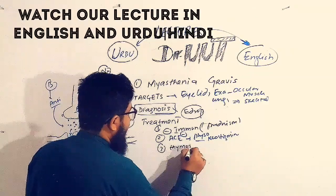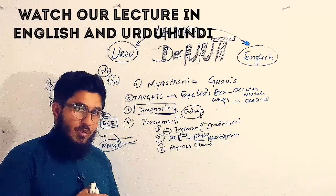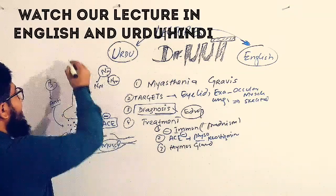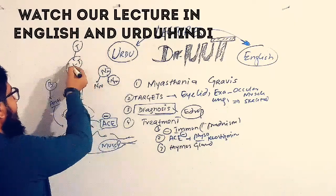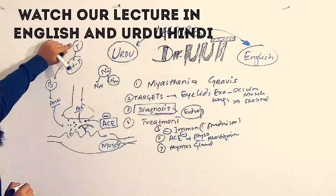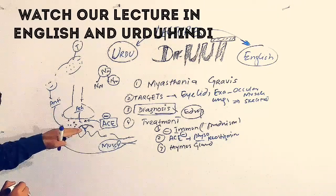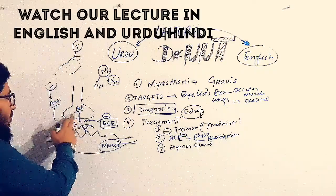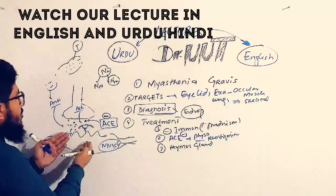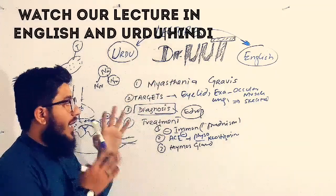The third treatment is removal of the thymus gland — thymectomy. Its full explanation is not widely discussed in books, but the thymus gland is responsible for releasing helper T cells, whose function is to activate B cells, which then release antibodies. If the thymus gland is removed, helper T cells are not available, B cells are not stimulated, antibodies are not produced, the receptor is not covered, and acetylcholine can bind to the receptor and activate it, resulting in muscle contraction.